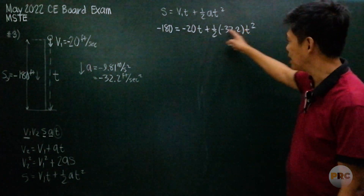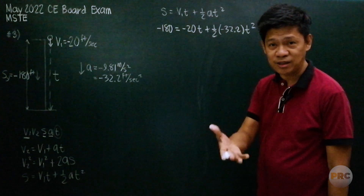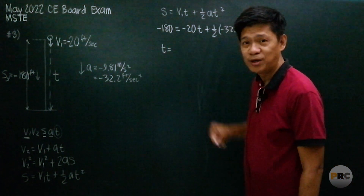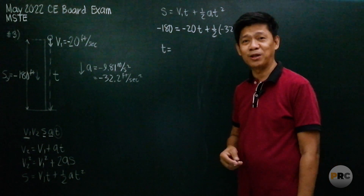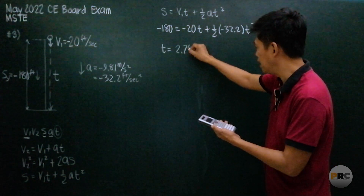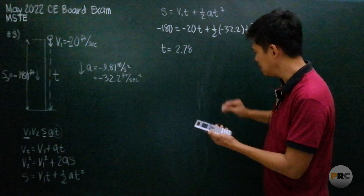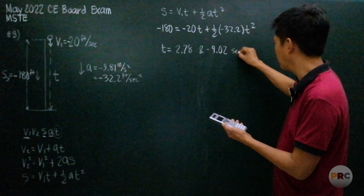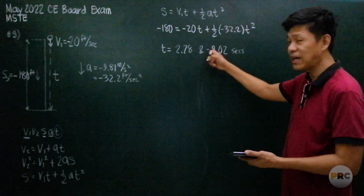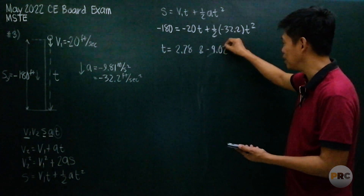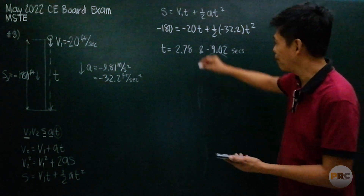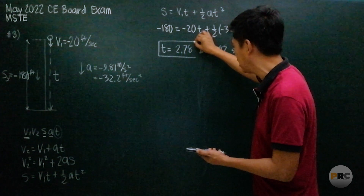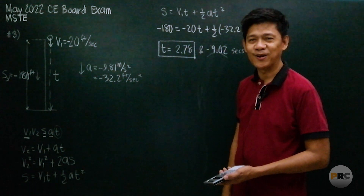This is a quadratic equation. Put it in your calculator and you will be able to solve for t. The result is t = 2.78 seconds and t = −4.02 seconds. But time cannot be negative, so the negative value must be disregarded. Therefore, the time to hit the ground is 2.78 seconds.